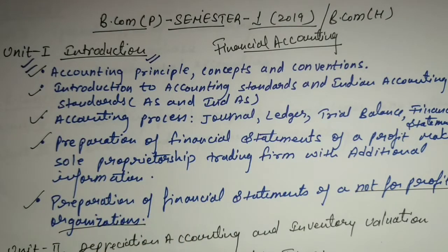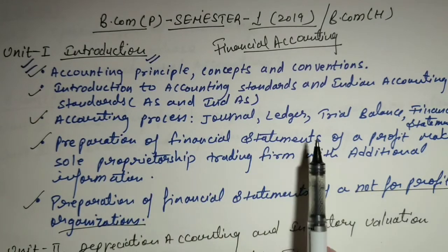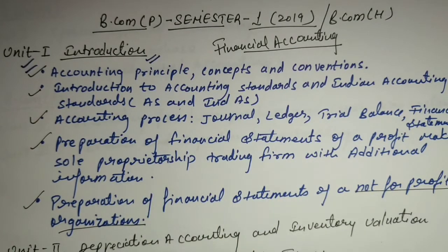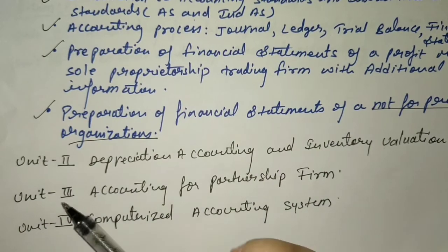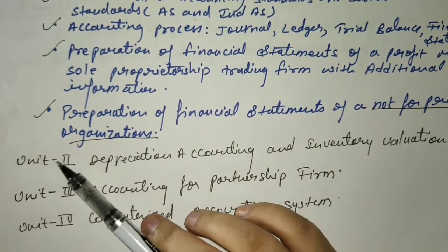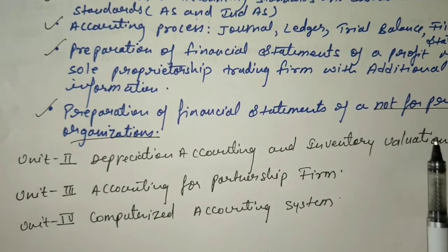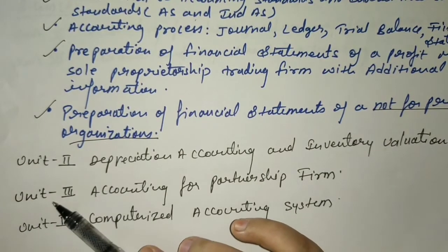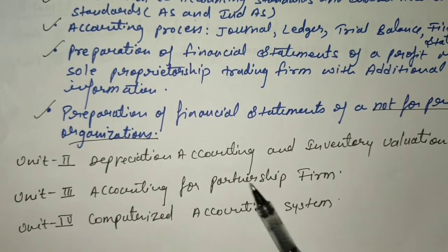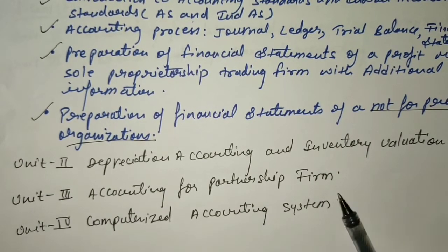Then after that, you have the second unit, which is Depreciation Accounting and Inventory Valuation — both the same. Then the next unit is Accounting for Partnership Firm — also the same. Then Computerized Accounting System — also the same.